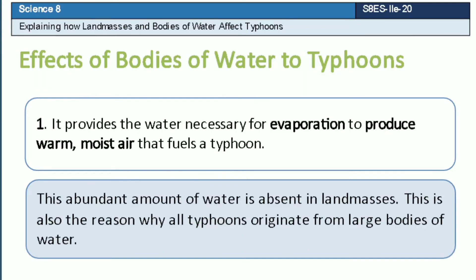Now, let's learn how bodies of water affect typhoons. Bodies of water affect typhoons in two ways. First, it provides the water necessary for evaporation to produce warm, moist air that fuels a typhoon. This abundant amount of water is absent in landmasses. This is also the reason why all typhoons originate from large bodies of water.